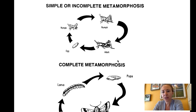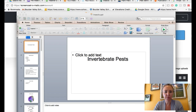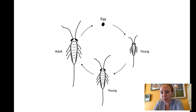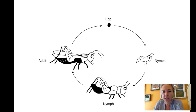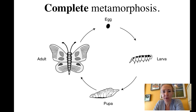Most insects undergo either a simple or incomplete metamorphosis or a full metamorphosis. An incomplete metamorphosis looks like an egg hatching into a small version of the adult insect, whereas complete metamorphosis has four distinct stages: the egg hatching into a larva, that larva developing into a pupa, and that pupa metamorphosizing into an adult. With incomplete metamorphosis, they kind of look the same, with maybe some distinctions like legs or wings, whereas with complete metamorphosis they have four very distinct body shapes and sizes.